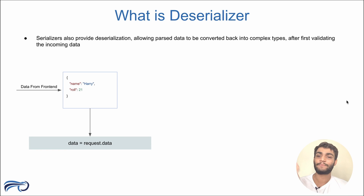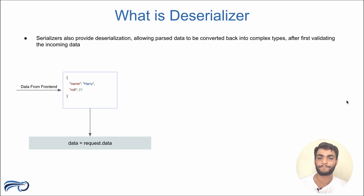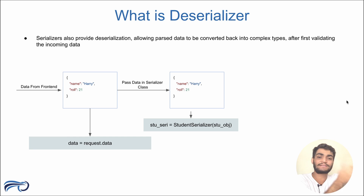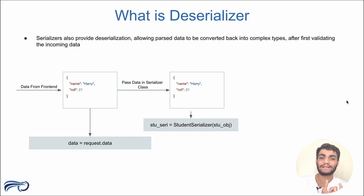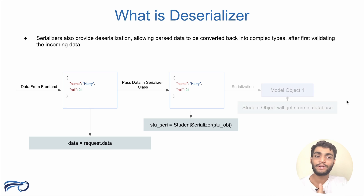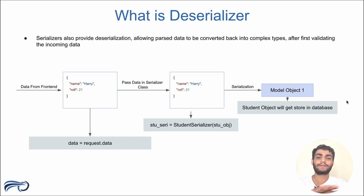For example, we receive data in JSON format with name and role number. We pass this data into the same serializer class — the StudentSerializer — and get back a serializer variable. The StudentSerializer takes care of everything: it takes the JSON format input and stores it into the database, making the developer's work much easier.